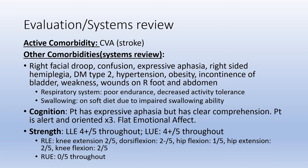For systems review, her active comorbidity is the CVA, and other comorbidities include right facial droop, confusion, expressive aphasia, right-sided hemiplegia, type 2 diabetes, hypertension, obesity, incontinence of bladder, weakness, and wounds on her right abdomen. That covers integumentary, metabolic, cardiac, and musculoskeletal systems. Regarding the respiratory system, she has poor endurance and decreased activity tolerance. She is on a soft diet due to impaired swallowing ability, which is also affected by the aphasia.